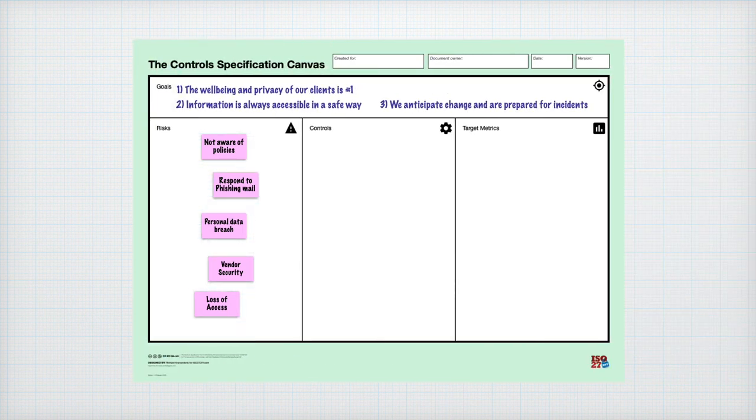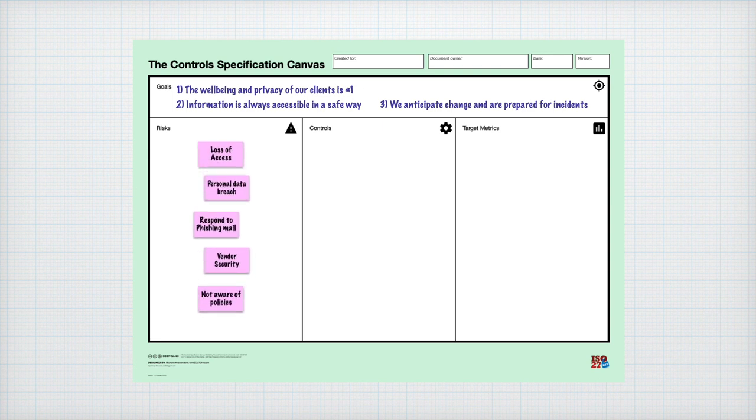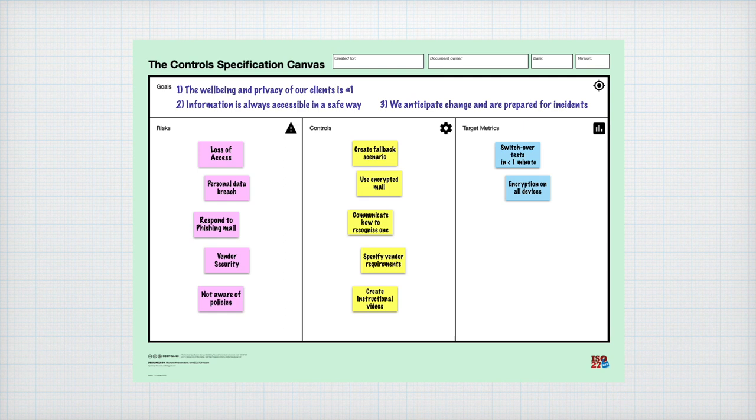Here, they assign priorities to the different risks, select applicable controls and decide on methods to measure effectiveness.